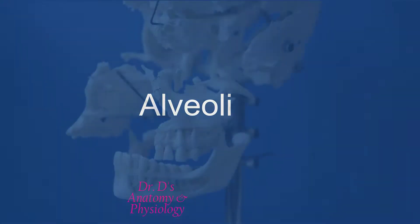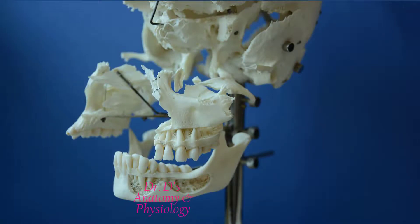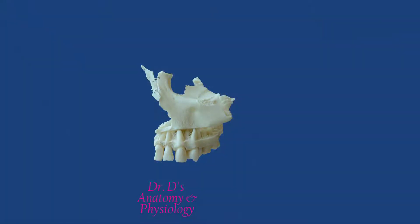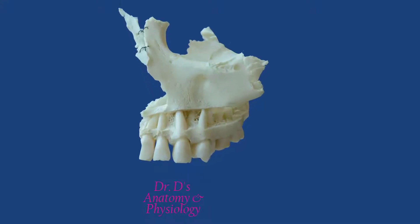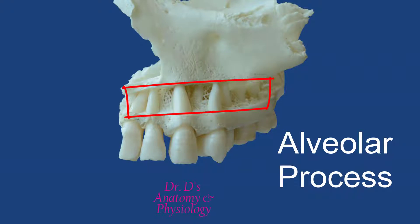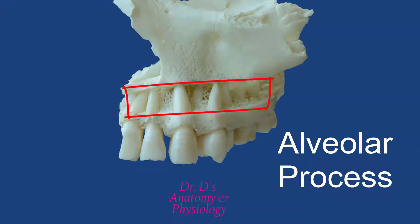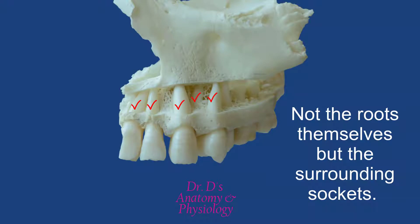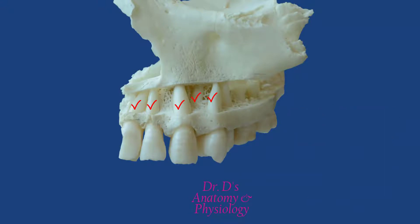So what are the alveoli we're talking about? In this close-up of the maxillary bone, the alveolar process has been opened up so that we can see the alveoli. The alveoli are essentially the sockets in which we find the roots of the teeth. So everywhere where you see these alveoli, you have the alveolar process. The alveolar process is not just a simple projection — it's a little more complicated than that.